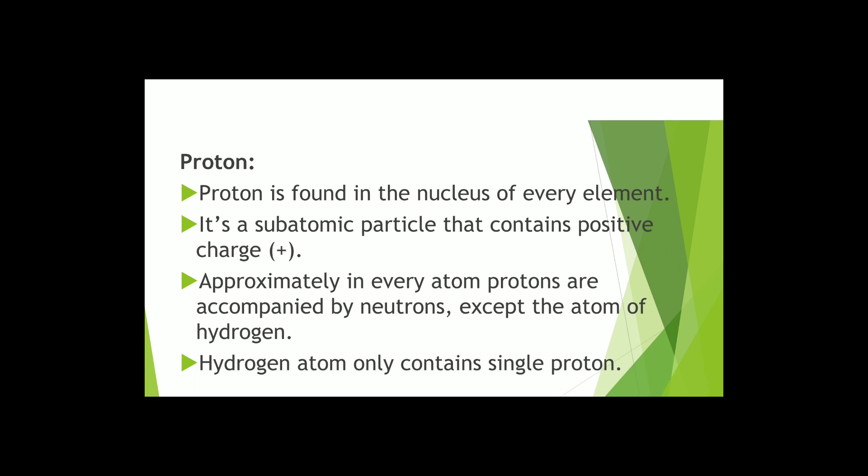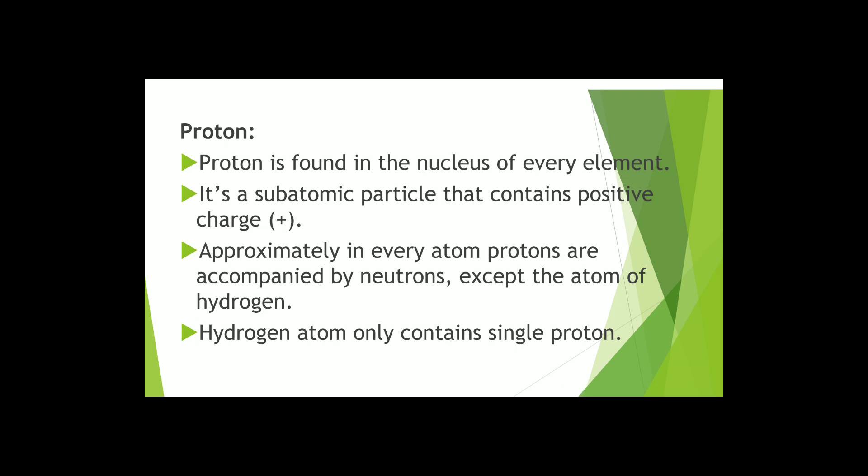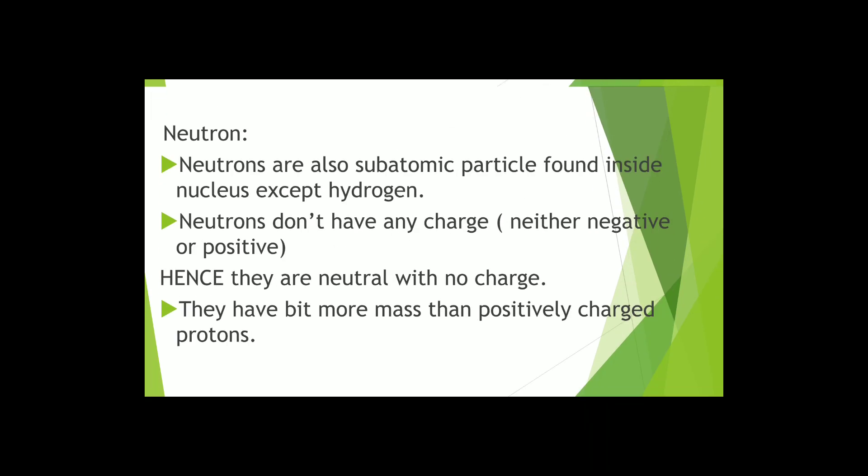So let's dive deep into the subatomic particles. Number one: proton. Proton is found in the nucleus of every element. It is forming part of the nucleus of an atom, determining the atomic number of an element. It weighs one AMU, one atomic mass unit. Approximately in every atom, protons are accompanied by neutrons except the atom of hydrogen. Hydrogen atom only contains single proton in its nucleus. Proton is a subatomic particle that contains positive charge.